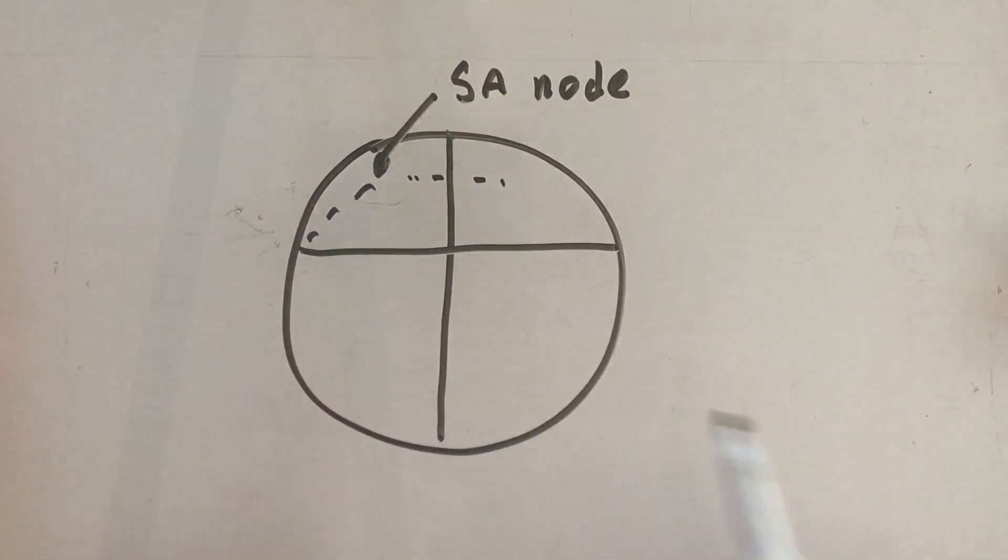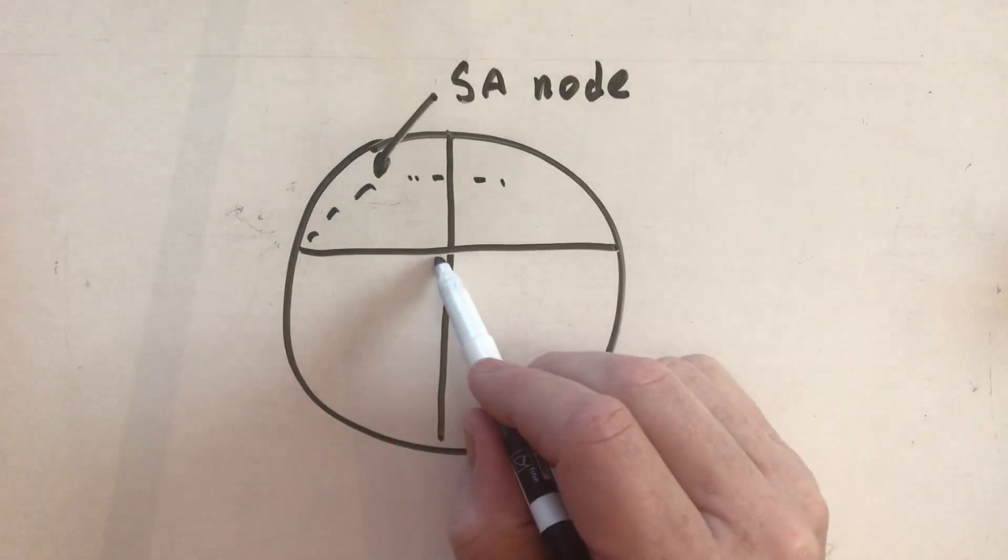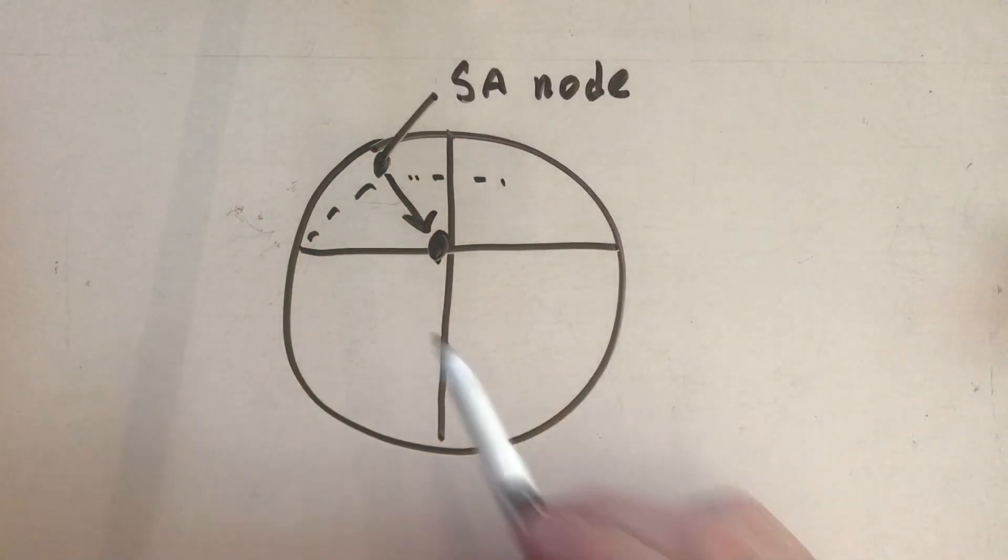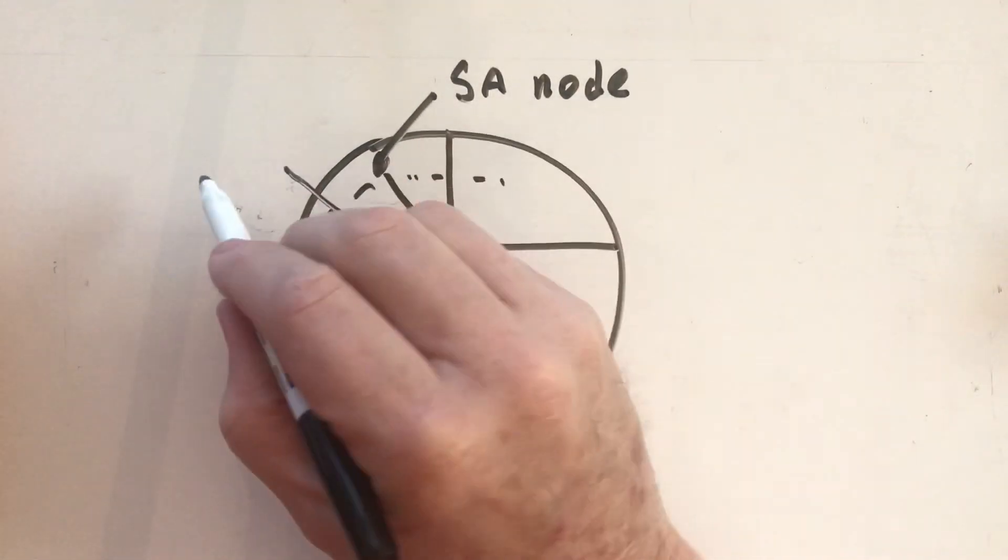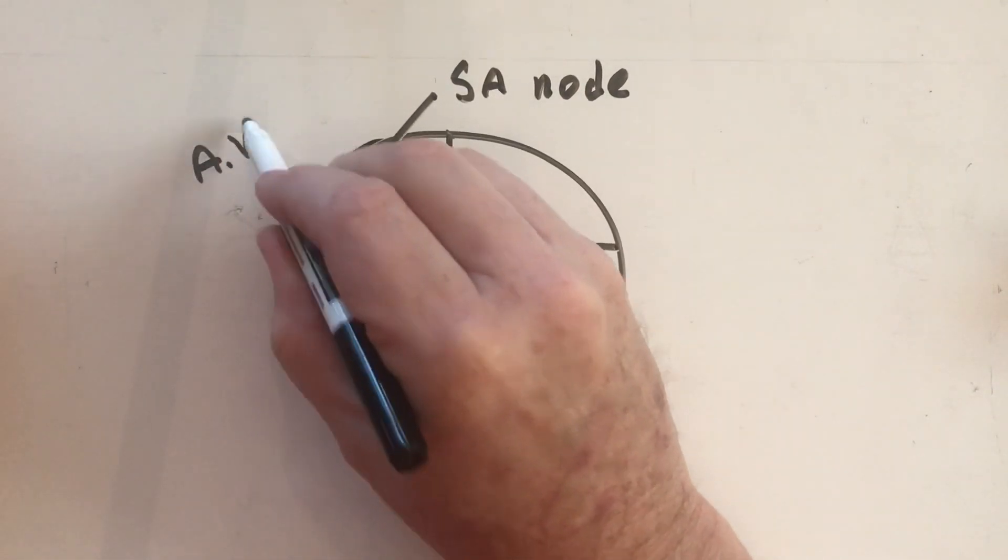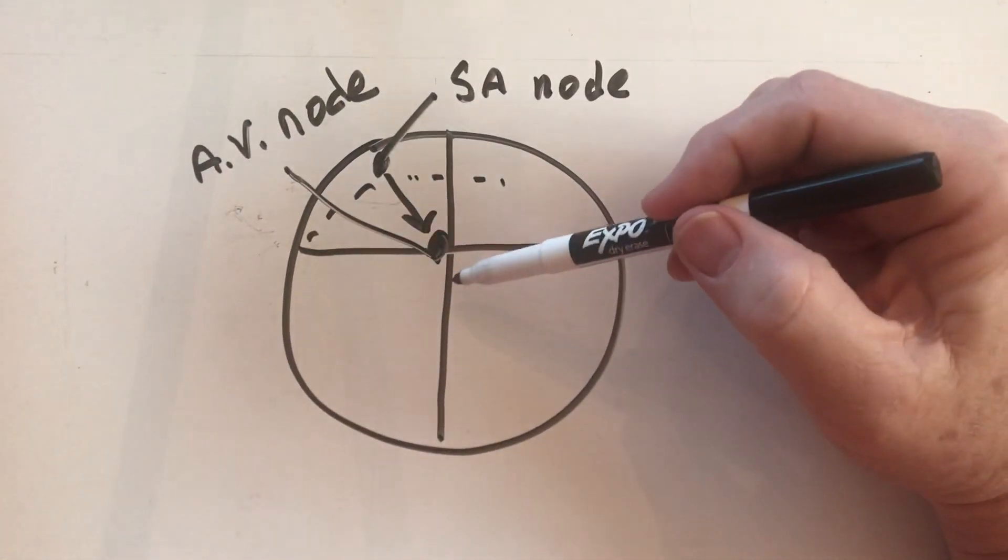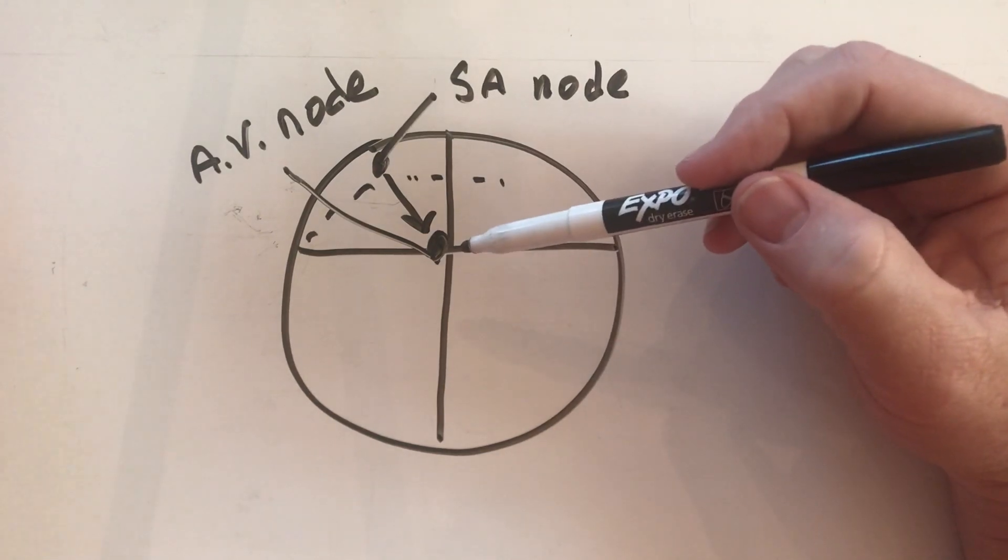But we also said it would send a signal down to the AV node. This is the AV node. And then what we said was that the signal is held up for about a hundredth of a second.